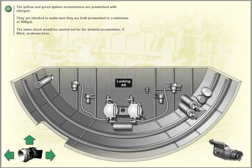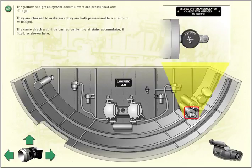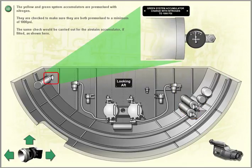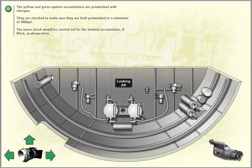The yellow and green system accumulators are pressurized with nitrogen. They are checked to make sure they are both pressurized to a minimum of 1,000 PSI. The same check would be carried out for the air stairs accumulator, if fitted.